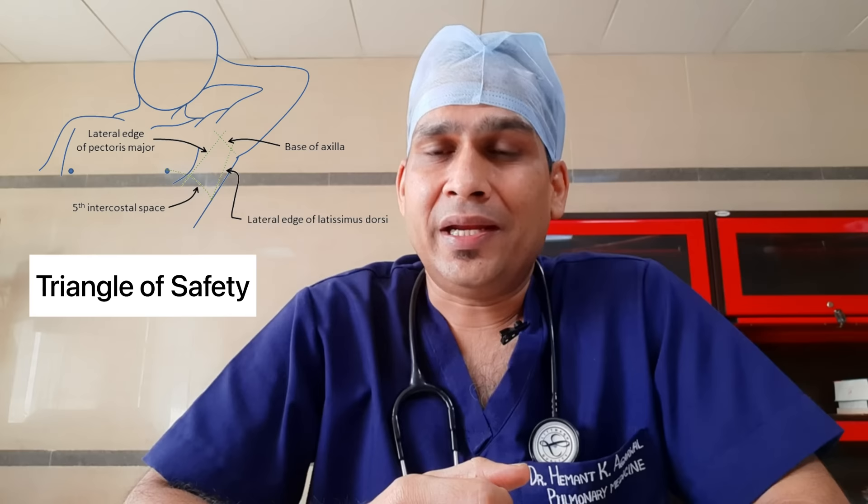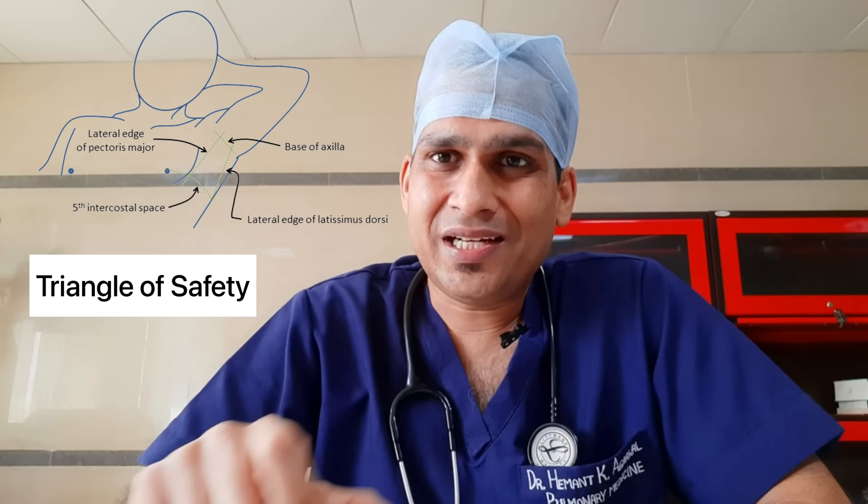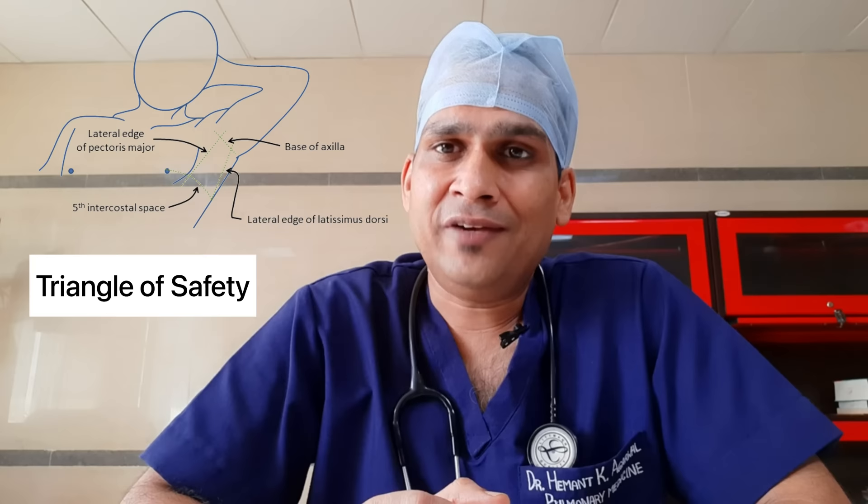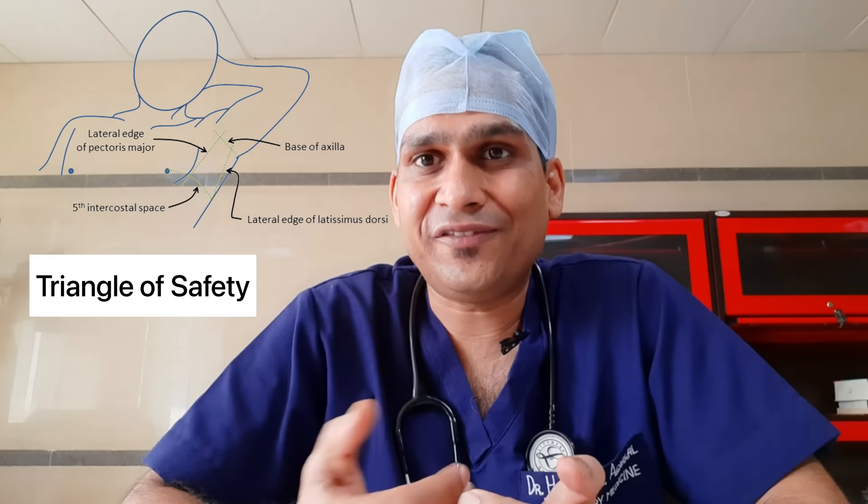The triangle of safety is an imaginary triangle formed with its apex at the axilla. One arm is the anterior axillary line, which is formed by the pectoralis major muscle. The posterior arm is the posterior axillary line, formed by the latissimus dorsi. The base is an imaginary line crossing the nipples in males and the fifth intercostal space in females. In this triangle there are no major blood vessels, so it is safe to perform the procedure here.